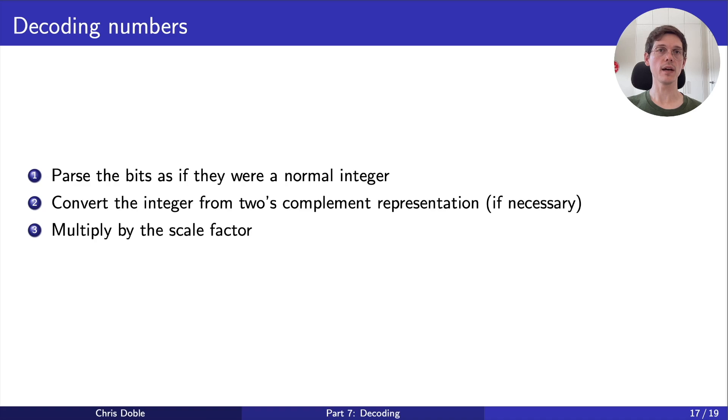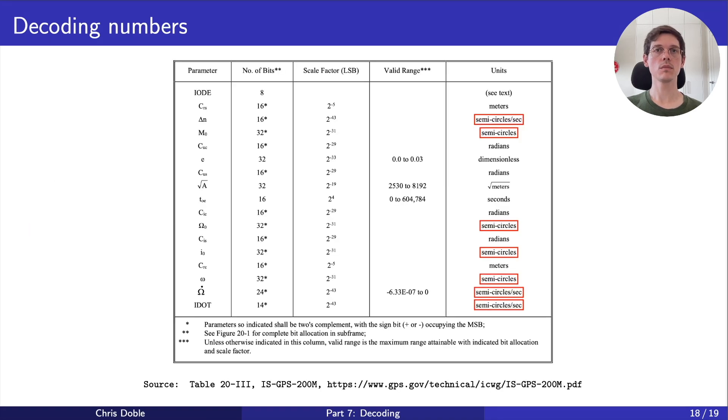One last thing I want to point out is that in this table, some of the parameters have units of semicircles, or semicircles per second. However, the equations that use these parameters later in the spec, assume they're in radians, or radians per second. I found it easiest to change units here, while decoding, to avoid confusion down the road.